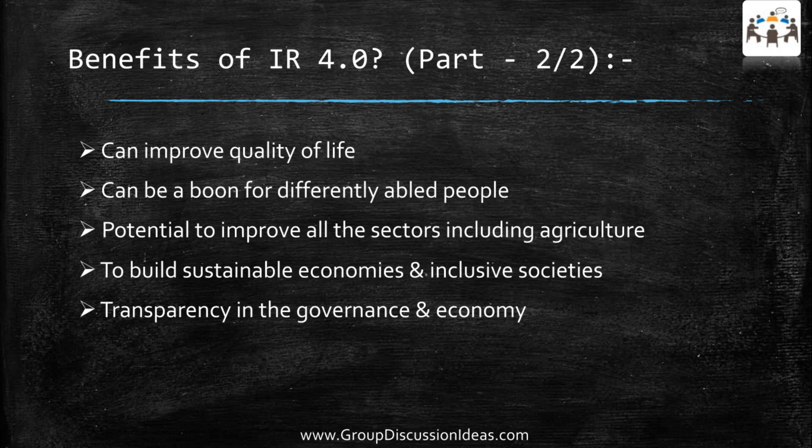The fourth industrial revolution can also strengthen infrastructure and thereby improve connectivity. It can improve the quality of life and can be a boon for differently-abled people. It touches almost every field and has the potential to improve all sectors including agriculture. We can utilize this revolution to build sustainable economies and inclusive societies, and it can also help in achieving transparency in governance and economy.